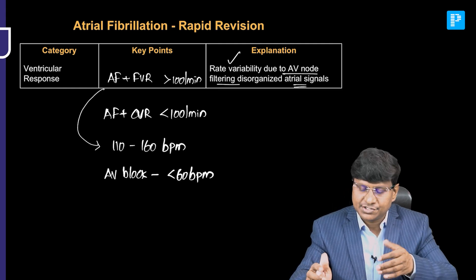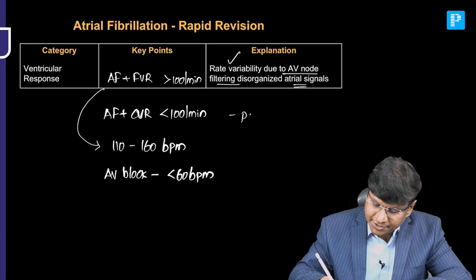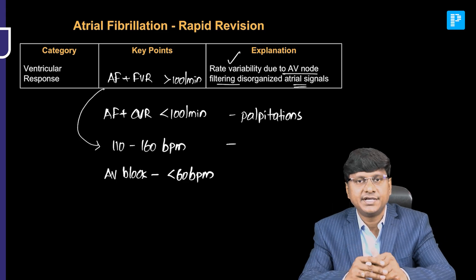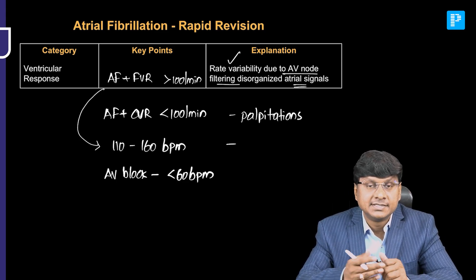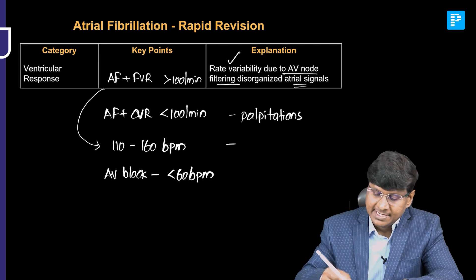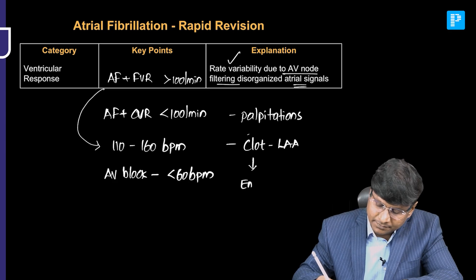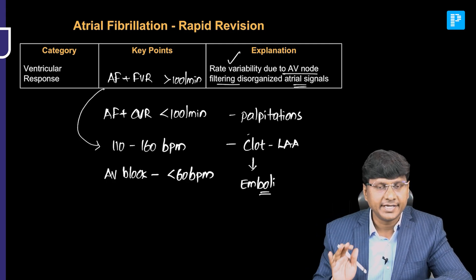Because of the increased ventricular rate, the clinical presentation will be in the form of palpitations. And because the atrial rate is increased to 300 to 400 beats per minute, you have just flickering of the atrial contraction, which can cause stasis of blood and result in clot formation within the left atrial appendage. This clot can get showered as emboli into the systemic circulation.